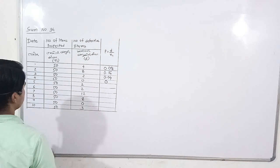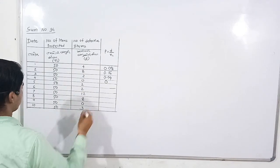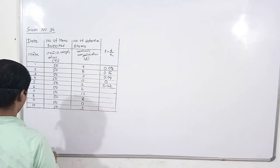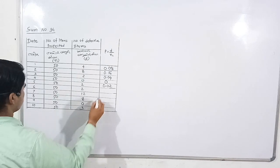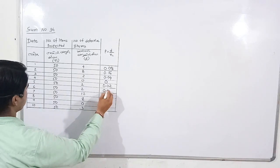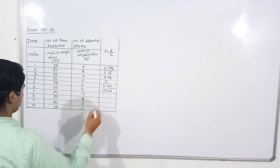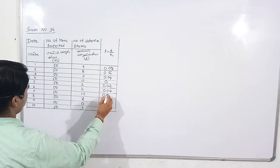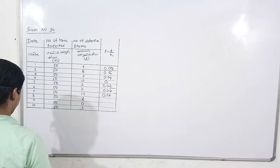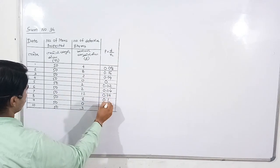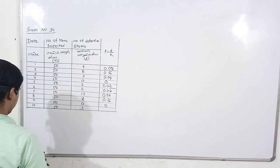0 divided by 50 is 0. 1 divided by 50, answer is 0.02. 2 divided by 50, answer is 0.04. 12 divided by 50, answer is 0.24. 8 divided by 50, answer is 0.16.